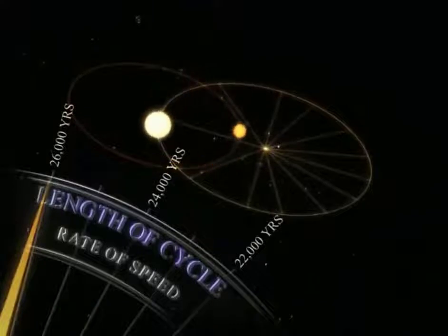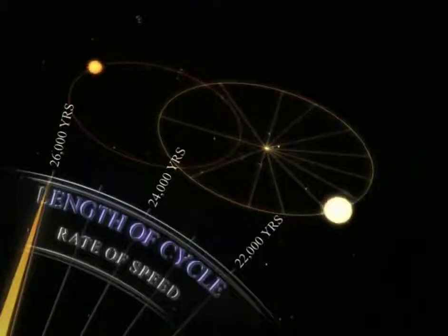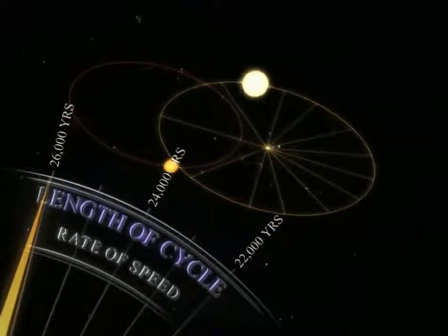If the current rate of speed were constant, a complete binary cycle would take almost 26,000 years.